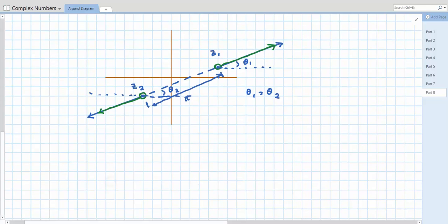The way to write that is the locus of arg(z - z1)/(z - z2) equals zero is